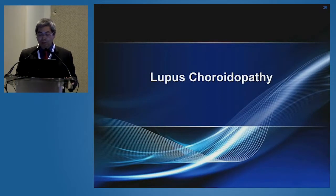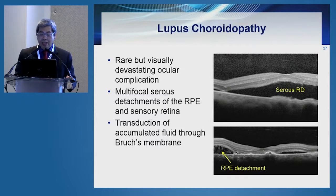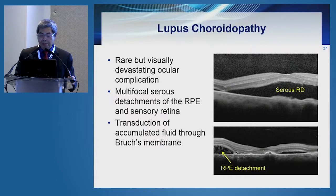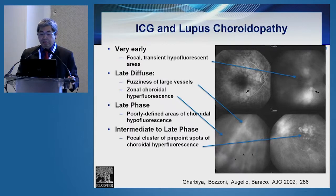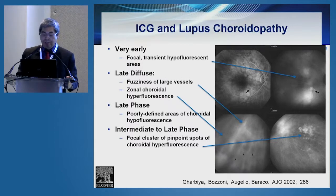Lupus choroidopathy is a more rare but also devastating complication in terms of visual outcomes. OCT scans are very helpful in identifying lupus choroidopathy because they clearly show multiple multifocal serous detachments as well as RPE detachments, believed to be due to transudation of fluid through Bruch's membrane from the choroid. ICG — indocyanine green angiography — is very useful for diagnosis, showing early hypofluorescent areas, fuzziness of choroidal vessels, zonal choroidal hyperfluorescence, and clusters of pinpoint choroidal hyperfluorescence.